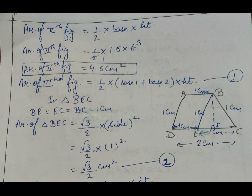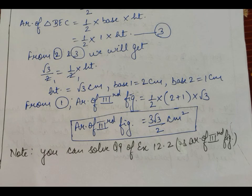In triangle BEC, we find BE = EC = BC = 1 centimeter, so triangle BEC has been formed as an equilateral triangle. We can find the area of triangle BEC by the formula (√3/4) × side², giving us the answer: area of triangle BEC = √3/2 cm².